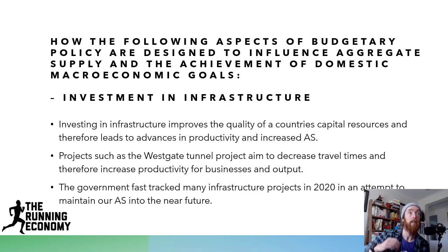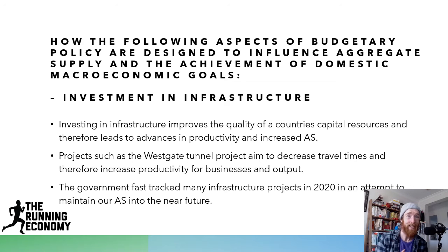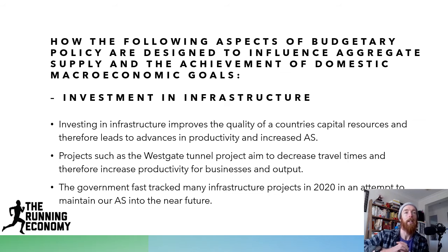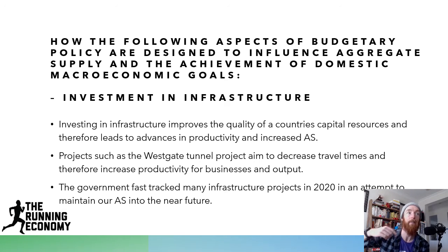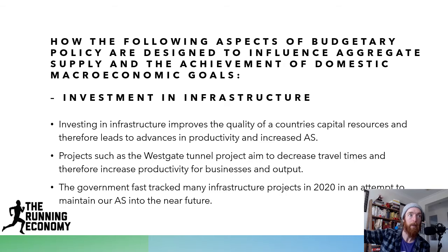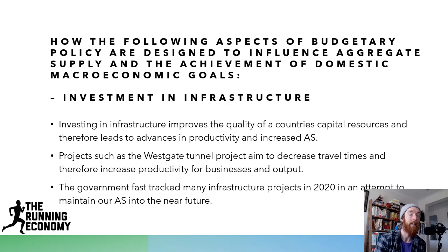Infrastructure spending aims to improve the quality of a country's capital resources and therefore lead to advances in productivity and increase aggregate supply. Really important with infrastructure spending is the short-term and long-term effects. In the short term, it can lead to negative impacts — productive bottlenecks, closing roads, making things less efficient. But in the long term, when those roads open up, like the Westgate Tunnel, it leads to more efficiency and lower cost of production. Projects such as the Westgate Tunnel project aim to decrease travel times, increase productivity and output, lower cost of production, increase productive capacity, and increase aggregate supply. The government fast-tracked many infrastructure projects in 2020 to increase and maintain aggregate supply, increase employment, and increase economic growth.